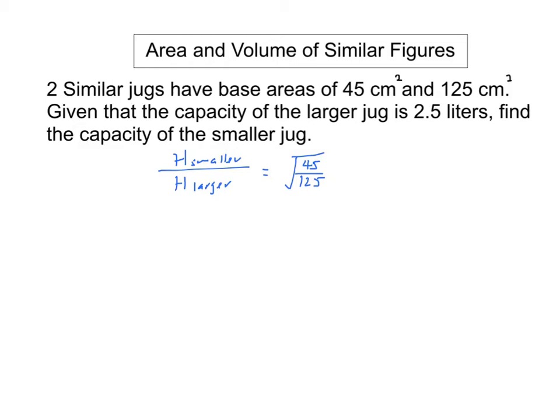So as a result, to find the capacity, we have the capacity of the smaller jug over the capacity of the larger jug will actually be the cube of the ratio of the heights between the smaller jug and the larger jug.